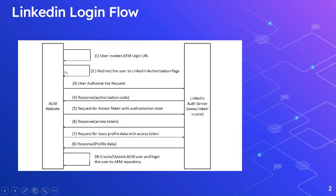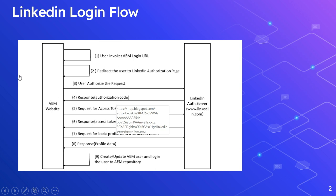Let's now see the LinkedIn login flow. This diagram represents the login flow. First, the user invokes the AEM login URL. Then AEM redirects the user to a LinkedIn authorization page because the login is going to happen via LinkedIn. The user then authorizes the LinkedIn request — if it is the first time, the user must authorize. Once the user is authorized, LinkedIn responds with an authorization code.